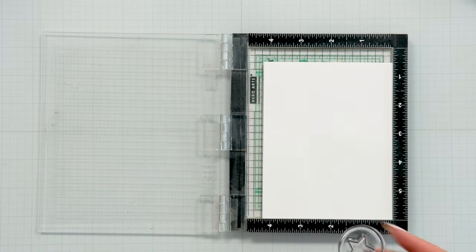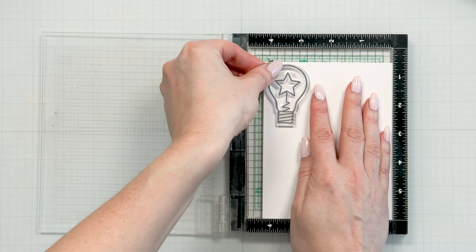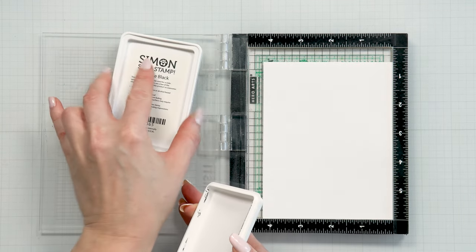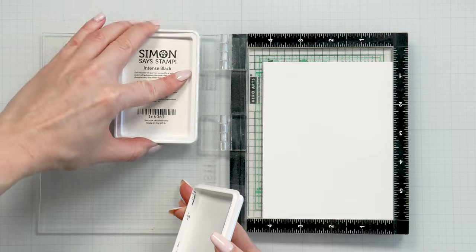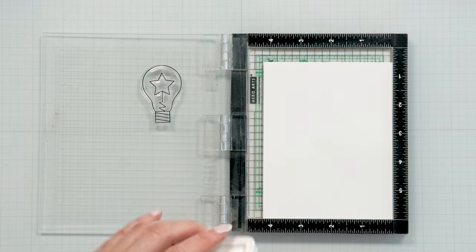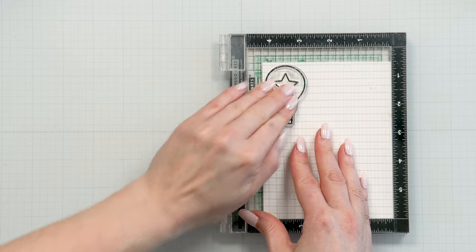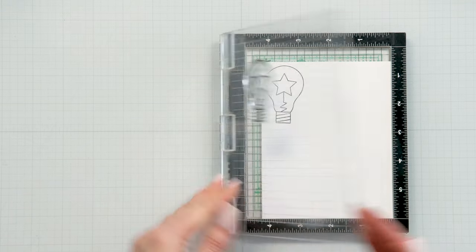So I started to work on my card by doing some stamping. Here I have my Neenah solar white 80 pound cardstock. I have placed it inside my mini Misti stamping tool. I also have a grip mat from Waffle Flower inside my Misti. It is holding the paper in place and I'm going to do a ton of stamping.